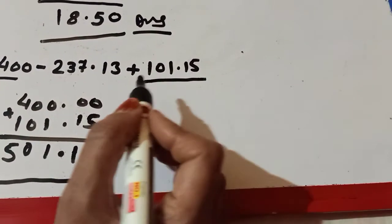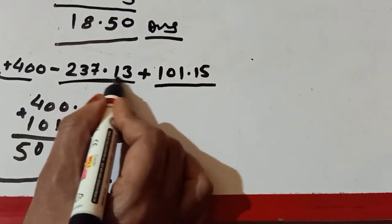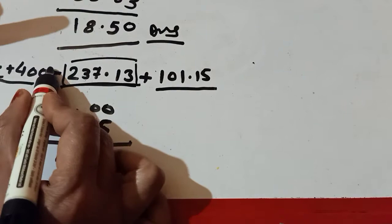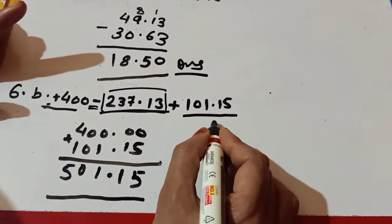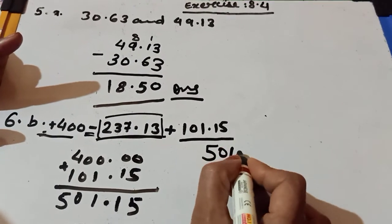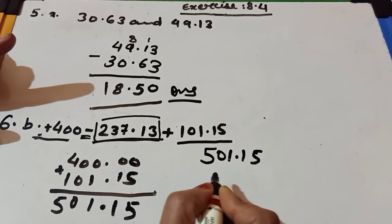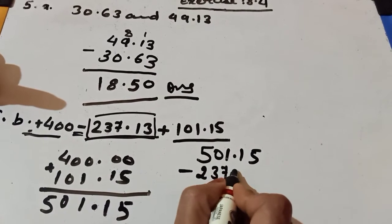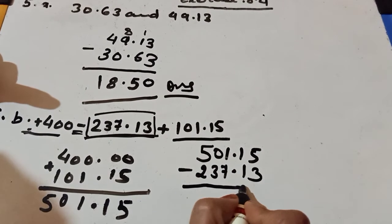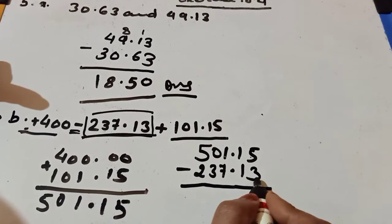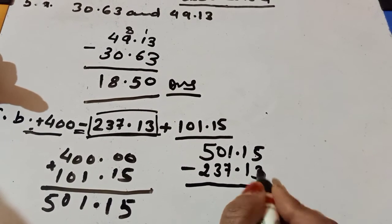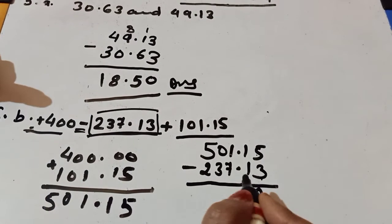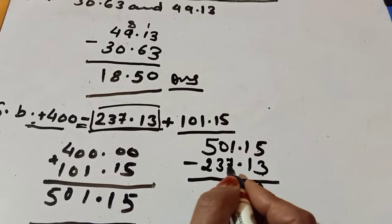The second phase of this question is we will take this number because here subtraction sign is given. We take 501.15 and we subtract 237.13 from this number. 5 minus 3 is equal to 2. 1 minus 1 is equal to 0.